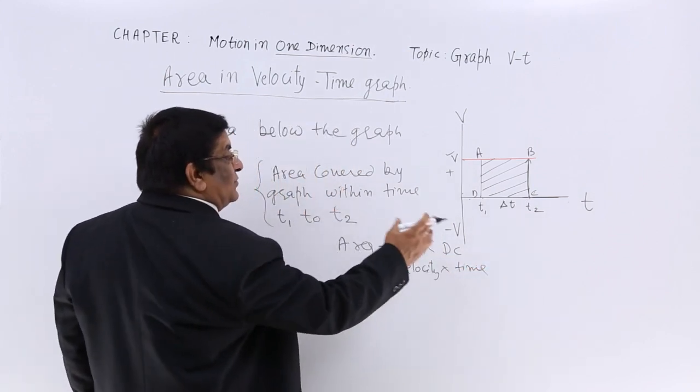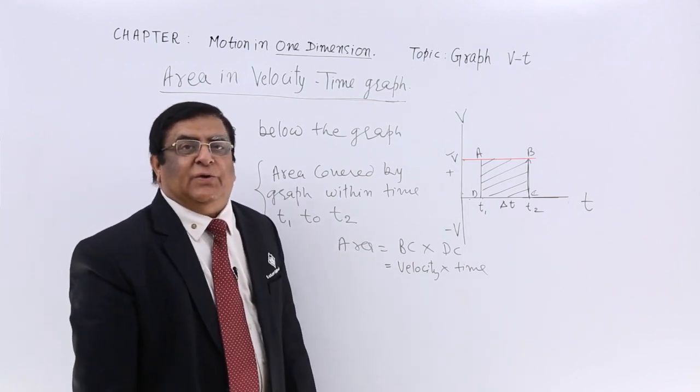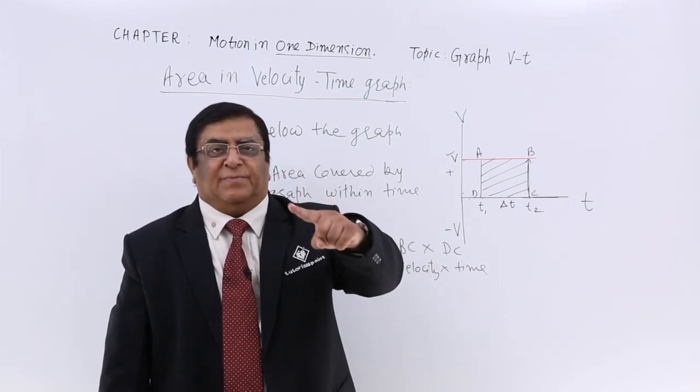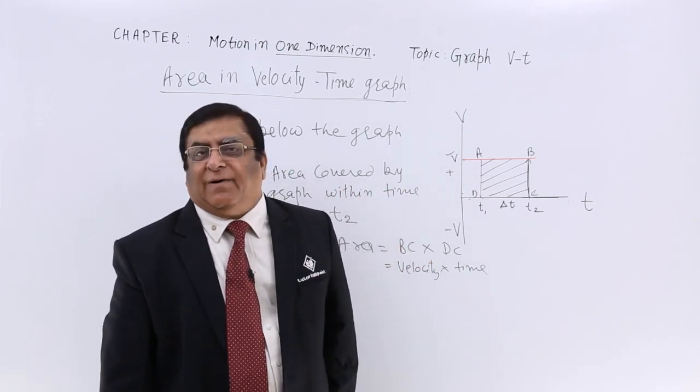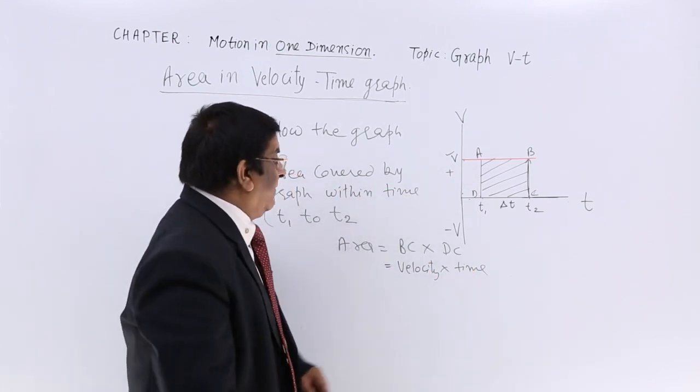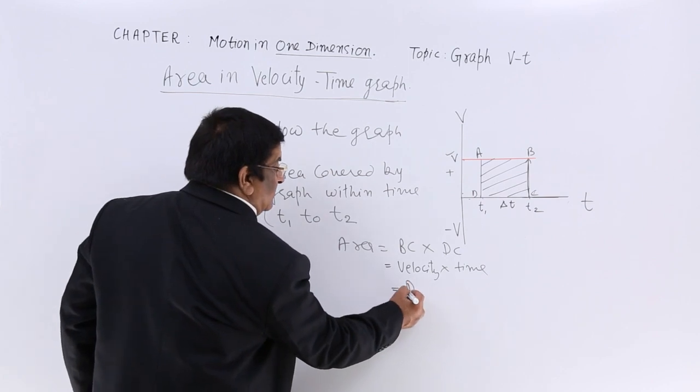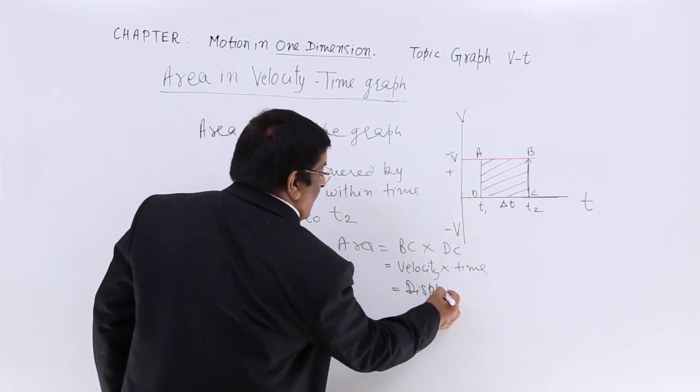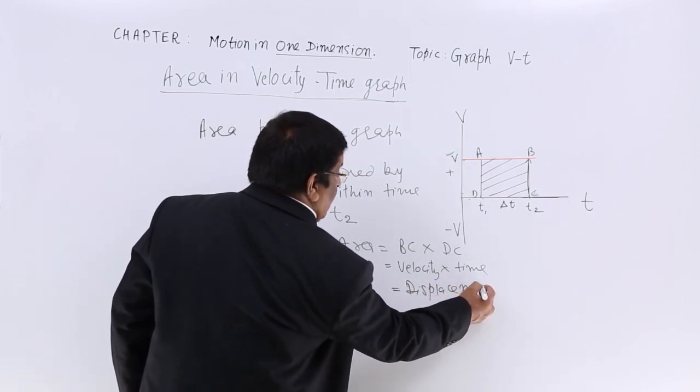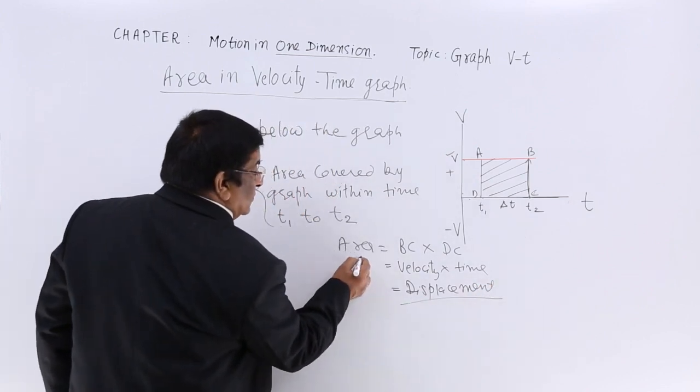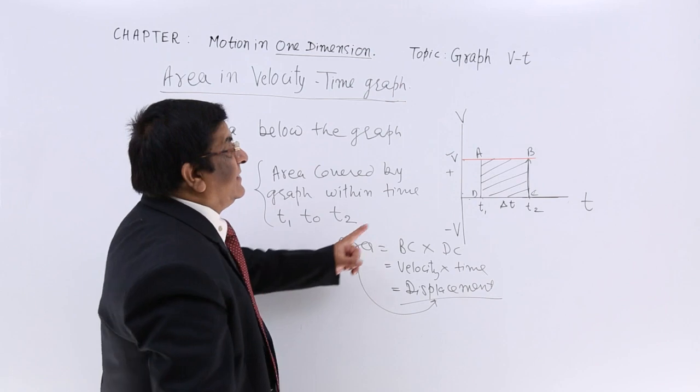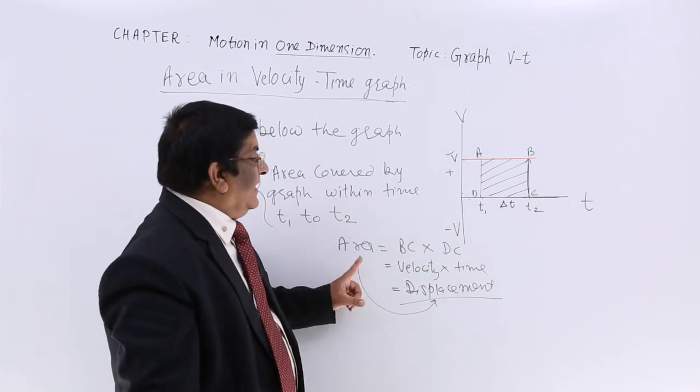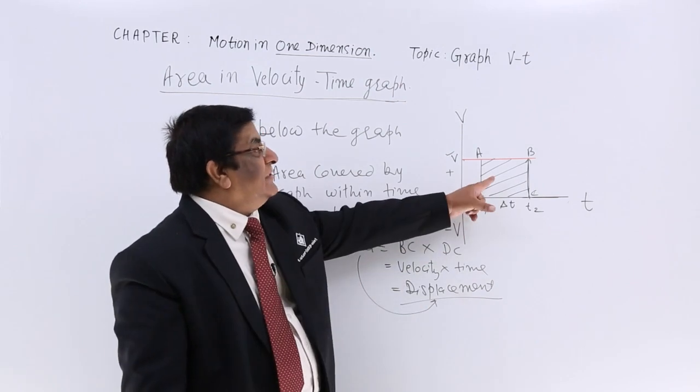Now velocity into time is what? We know the velocity is displacement upon time. So displacement is equal to velocity multiplied by time. So velocity multiplied by time is displacement.